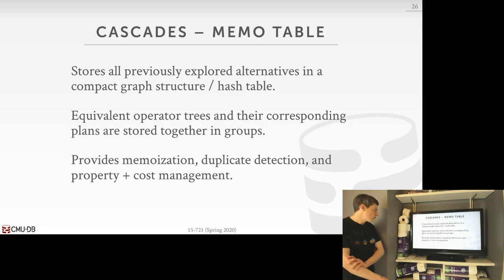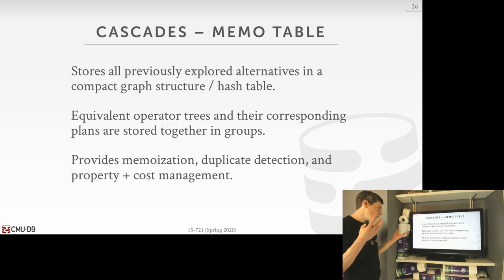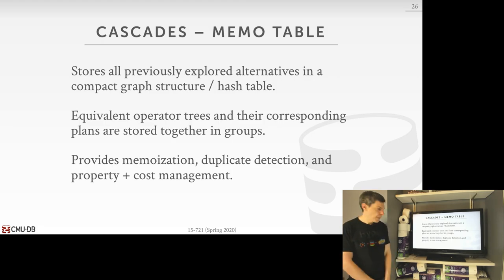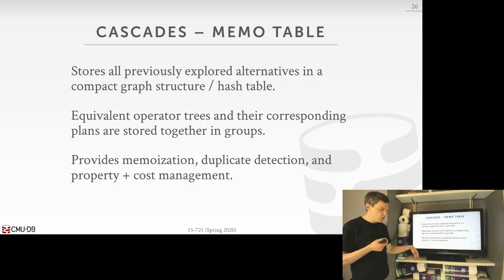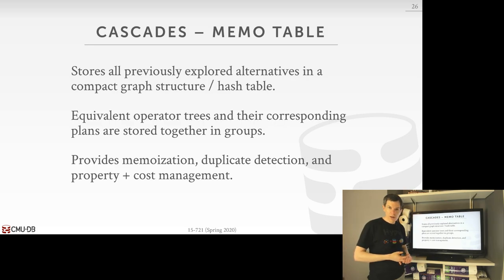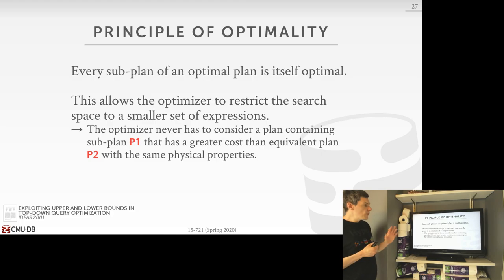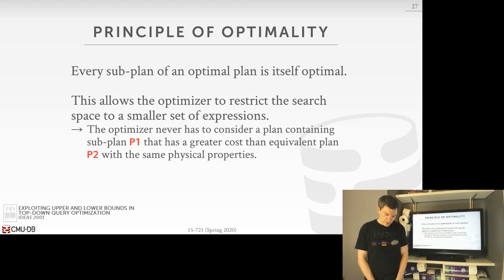The memo table — the memoization table — handles this. In the original Cascades paper they use a graph data structure; in our implementation we use a hash table, as do other open-source Cascades implementations. The memo table lets us identify groups we've visited before and avoid re-examining them, because we already know what the query plan looks like after applying that transformation. This ties to Bellman's principle of optimality — if I have an optimal query plan comprising two groups, there can't be another better physical plan for one of those groups, because if there were, I wouldn't have the optimal plan.